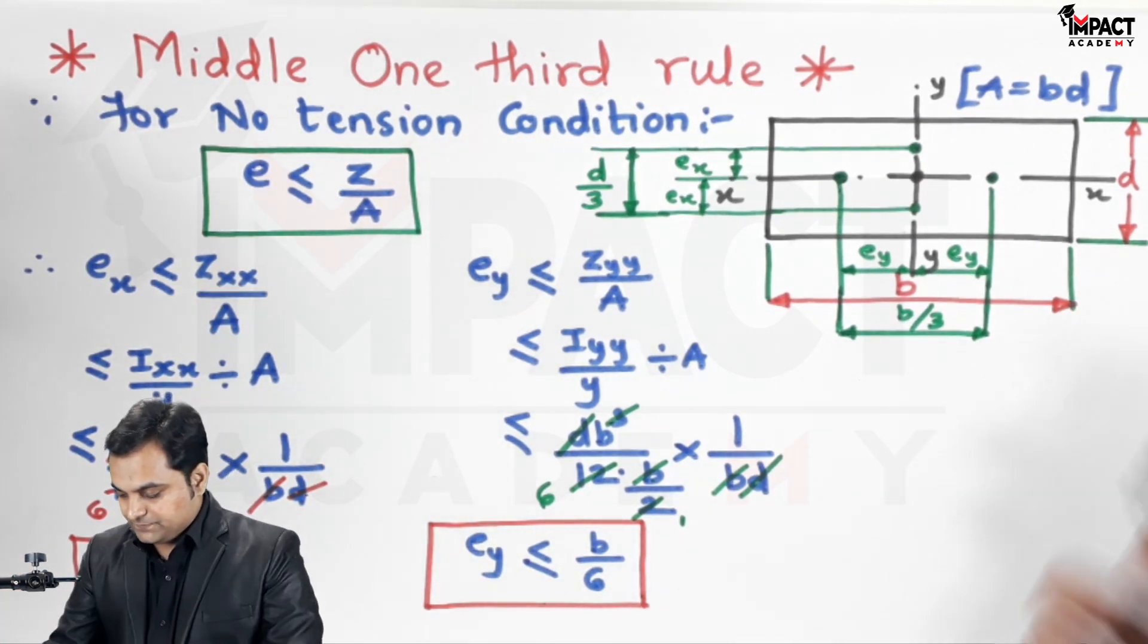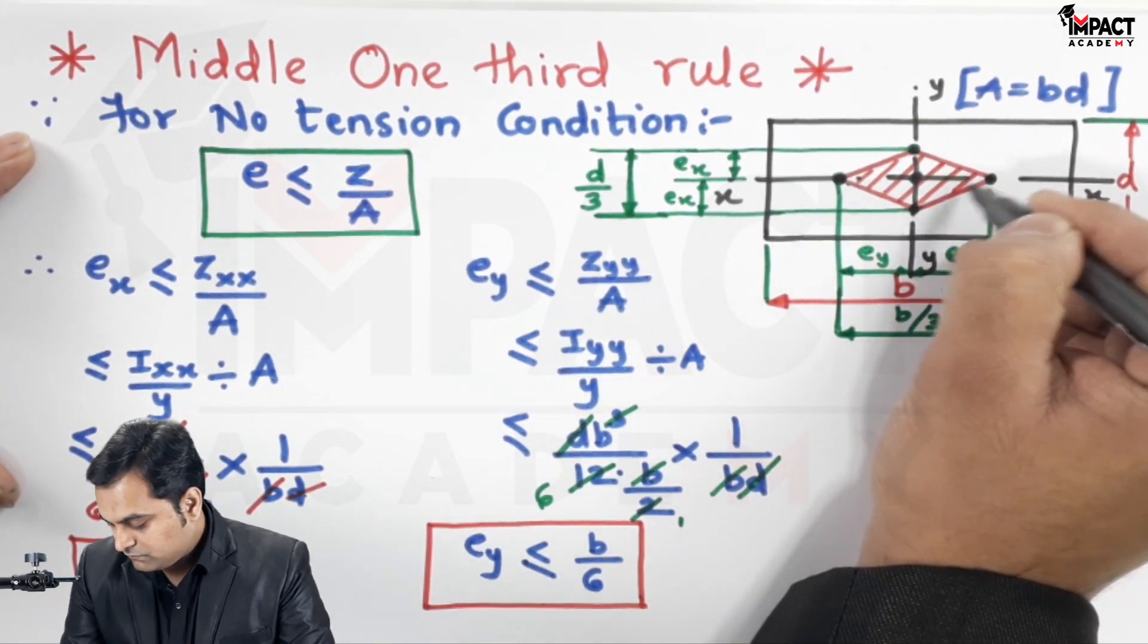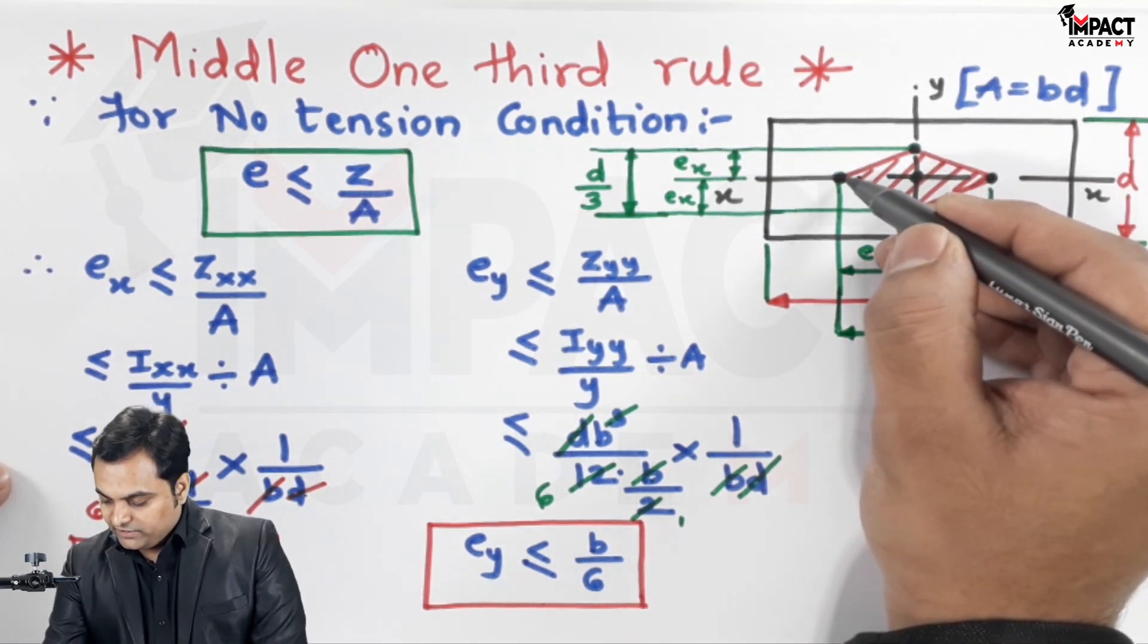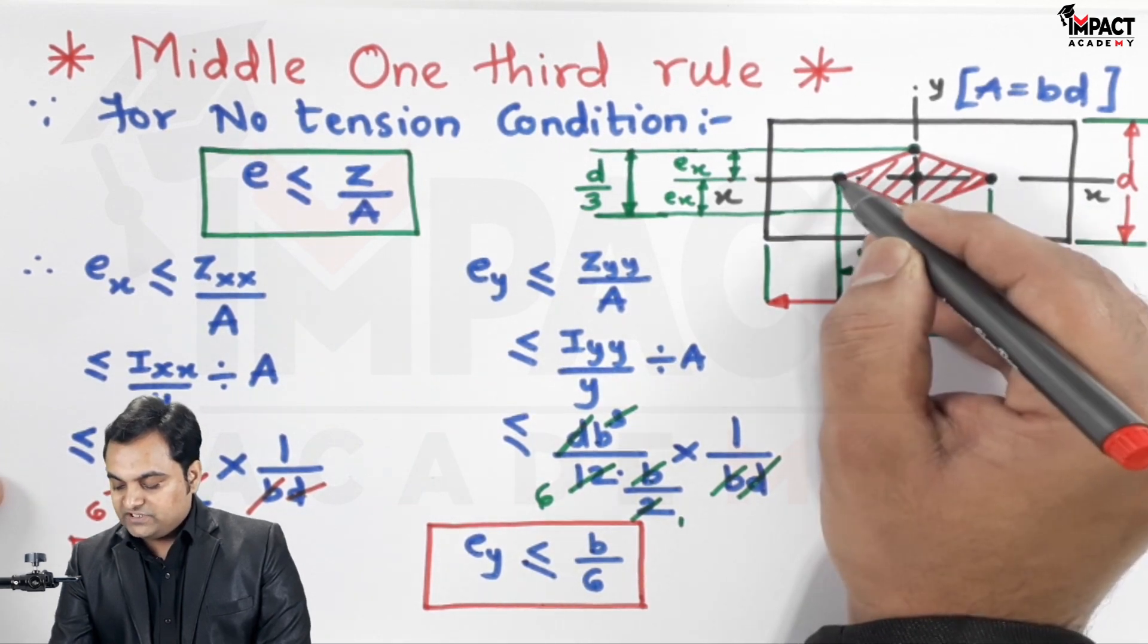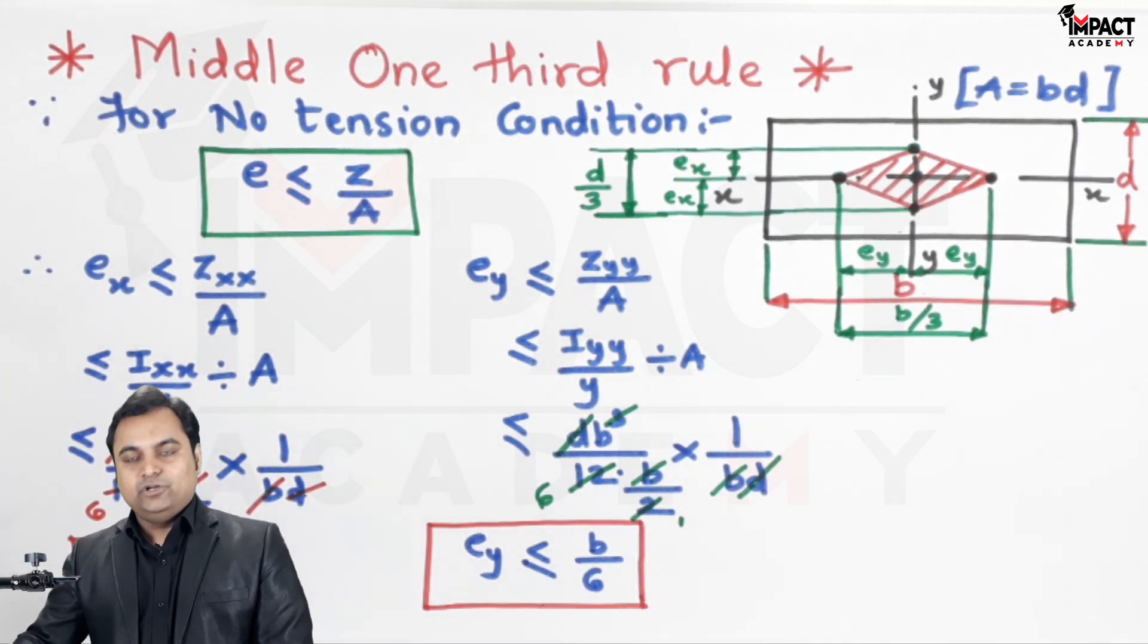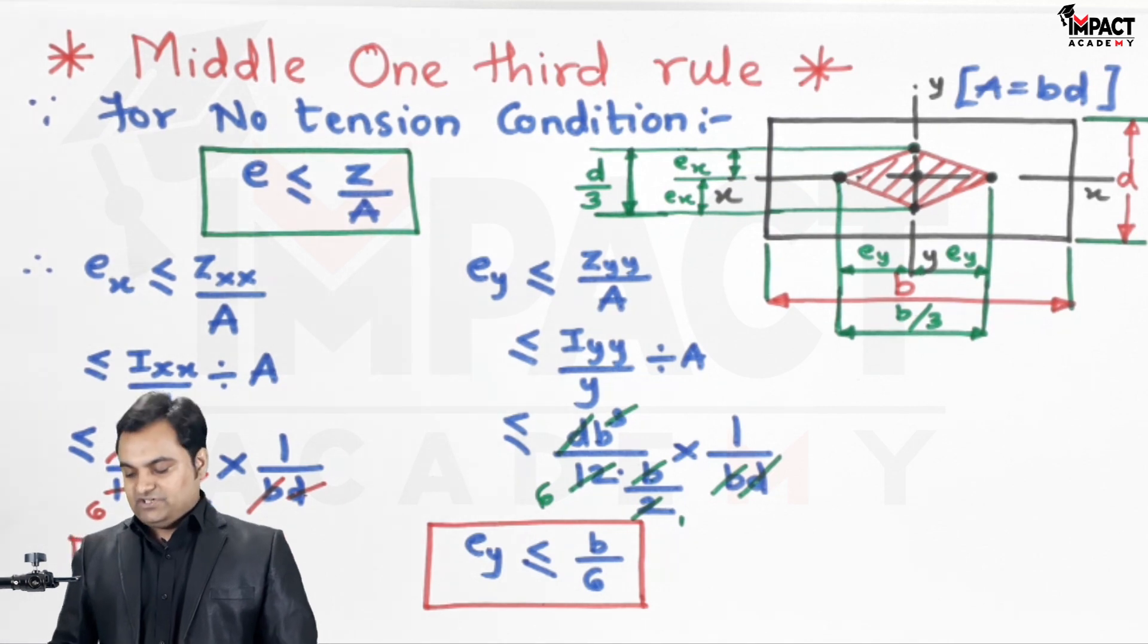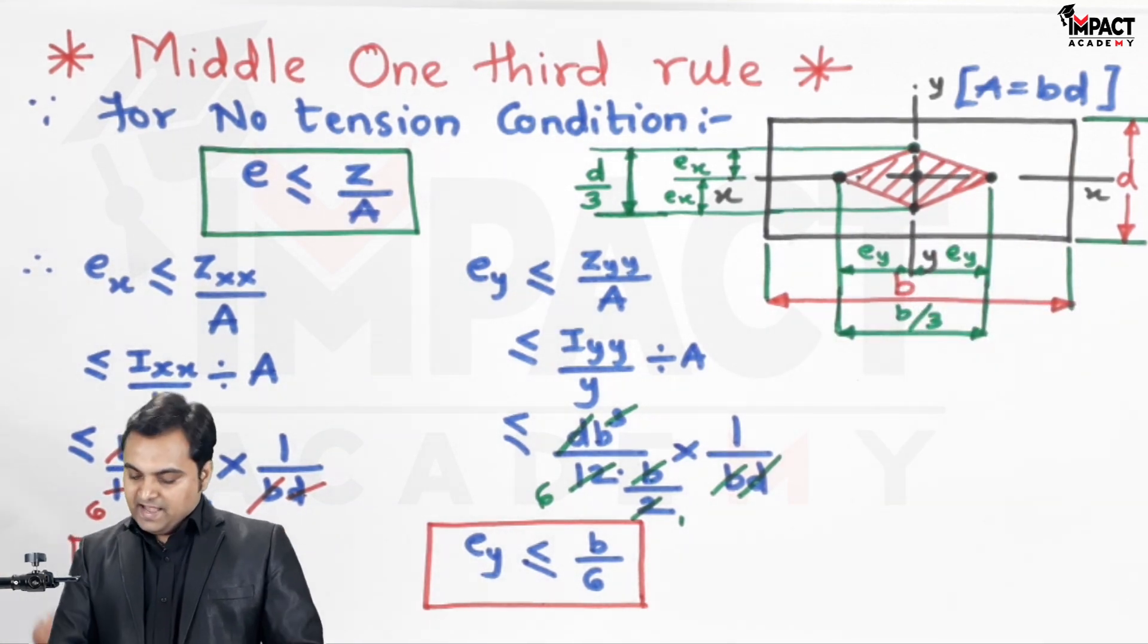When I join all these points, I get this area. The meaning of this area is: whenever we place the load inside this area or on its boundary, there will be no tension in the column. But the moment we move the load outside this area, it will result in tension in the section. To avoid tension, which is not desired, we must place the load in this region for a rectangular section - that is the middle one-third rule.